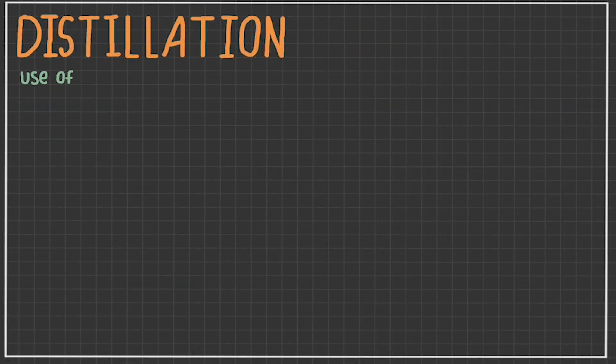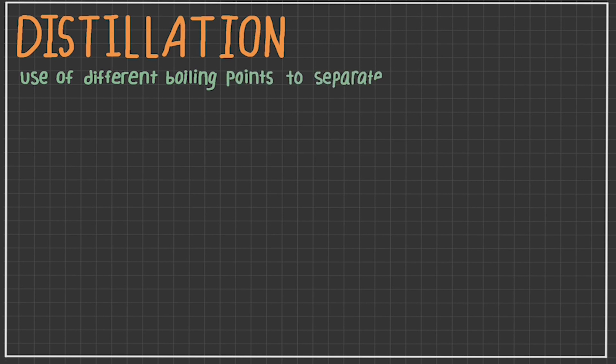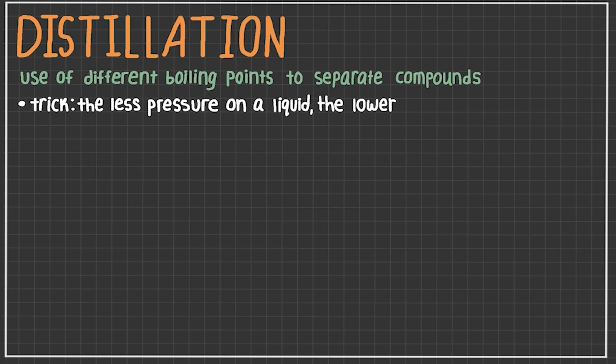Distillation is the use of different boiling points of different compounds to separate them. One trick sometimes utilized is the idea that the lower the pressure is on a liquid, the lower the energy required to get it to boiling point will be. This is because the molecules will be met with less resistance as they begin to spread further apart and transition to the gaseous state.